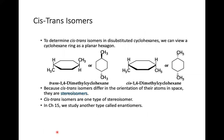To identify cis-trans isomers distributed on cyclohexane, look at the planar hexagon form. On the same side is cis; on opposite sides is trans. Because cis-trans isomers differ in the orientation of their atoms in space, they are called stereoisomers. Cis-trans isomers are one type of stereoisomer; another type, to be discussed in future lessons, is enantiomers.